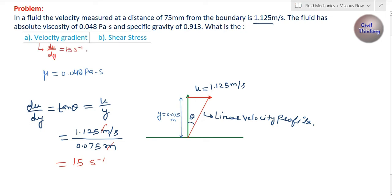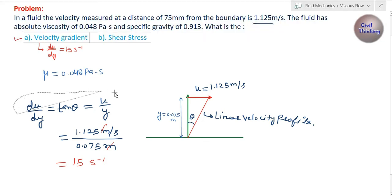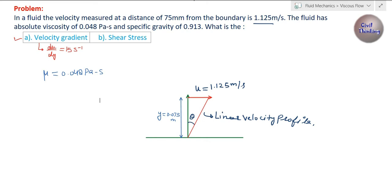So we found the velocity gradient: du/dy equals 15 per second. If you want the PDF of this problem, I have solved this problem on a PDF step by step, and you can get this PDF from the description or the comments. You can download the PDF file there.